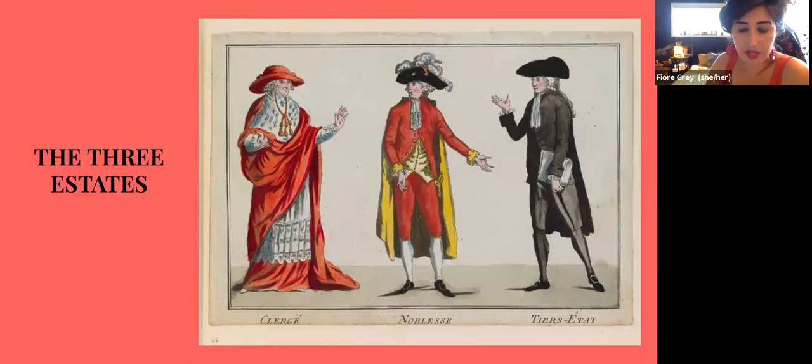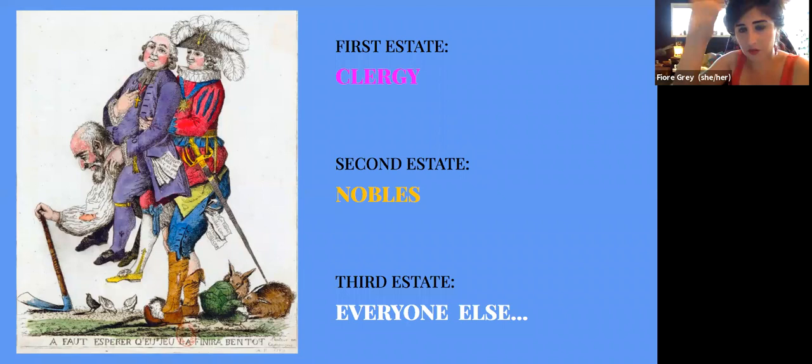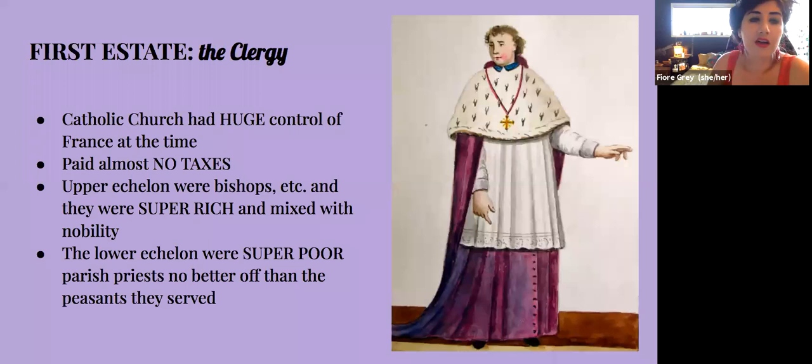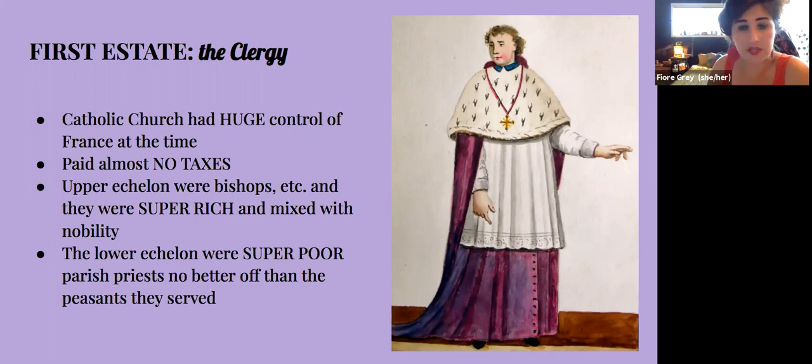France was organized into three estates. The first estate was the clergy at the very top — above the king was above all, but the clergy held the top estate. The Catholic Church had huge control of France. They paid almost no taxes. The upper echelon — bishops and the like — were super rich and mixed with the nobility, while the lower echelon, often parish priests, were no better off than the peasants they served.